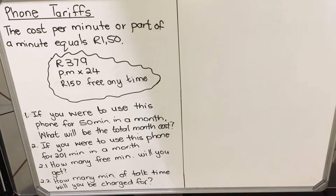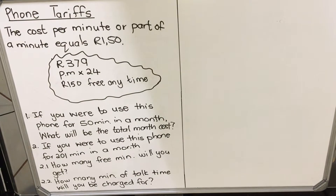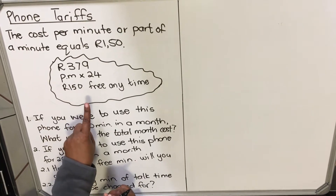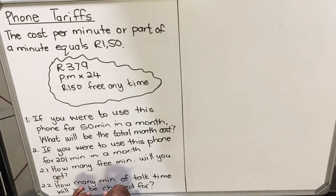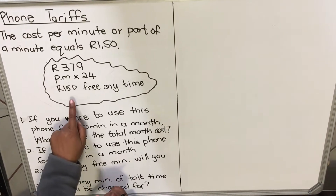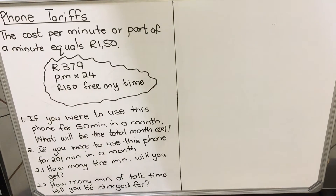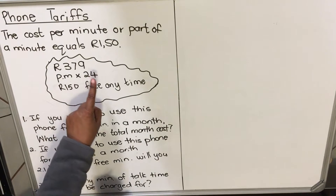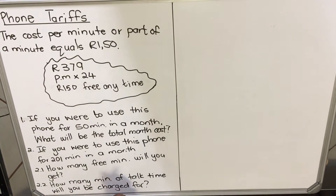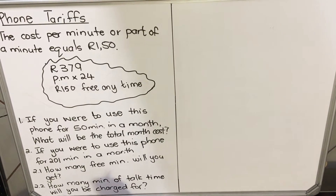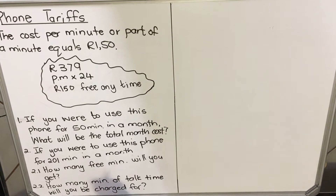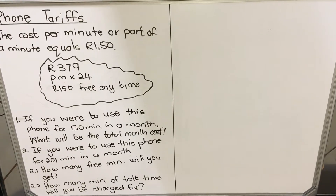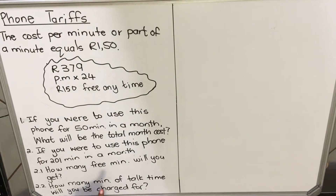Hello everyone, this is a video on tariffs, but specifically phone tariffs. Here we have an advertisement: we are paying 379 for 24 months for that particular phone, and they are giving you 150 free anytime. The cost per minute, or part of a minute, equals 150 — meaning if you call for one minute you pay 150, but if you don't finish that one minute, you still pay 150.